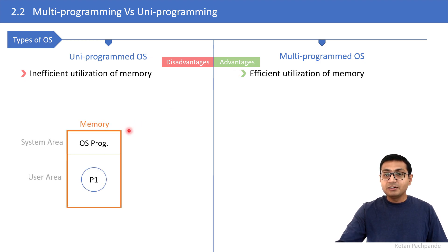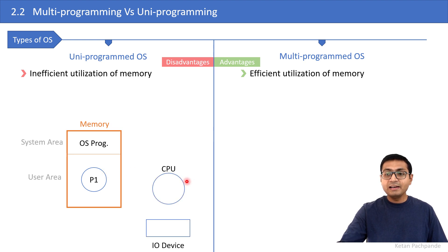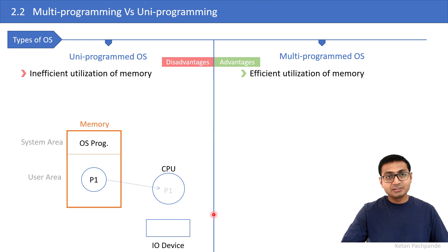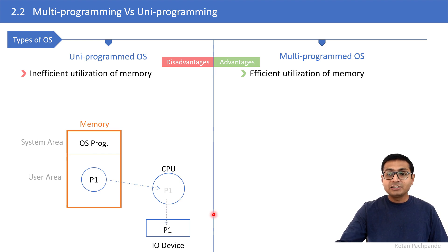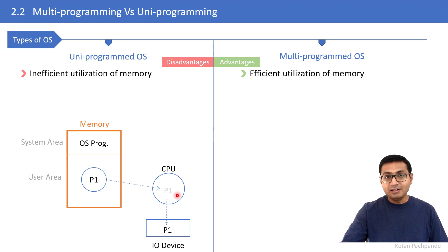Let me explain other disadvantages of uniprogramming with this diagram. Process P1 is loaded in memory, and we have the CPU and an IO device. Let's assume the process needs to perform some IO. Process P1 is scheduled to the CPU, starts executing its instructions, and while doing so it needs some IO. After some time, it goes to the IO device to perform the IO task. Meanwhile, the CPU remains idle.